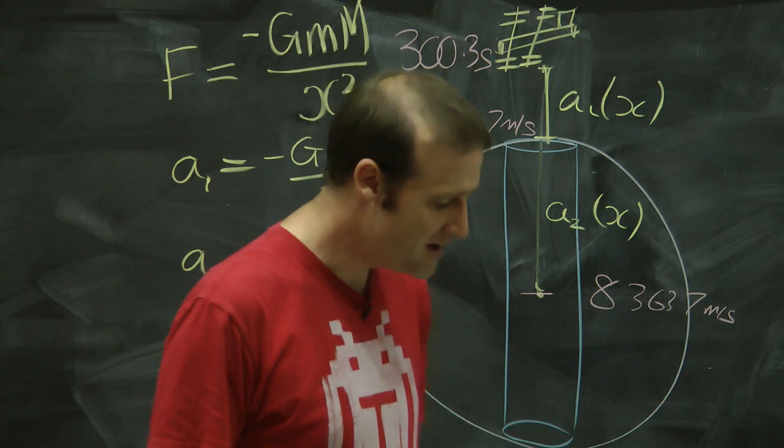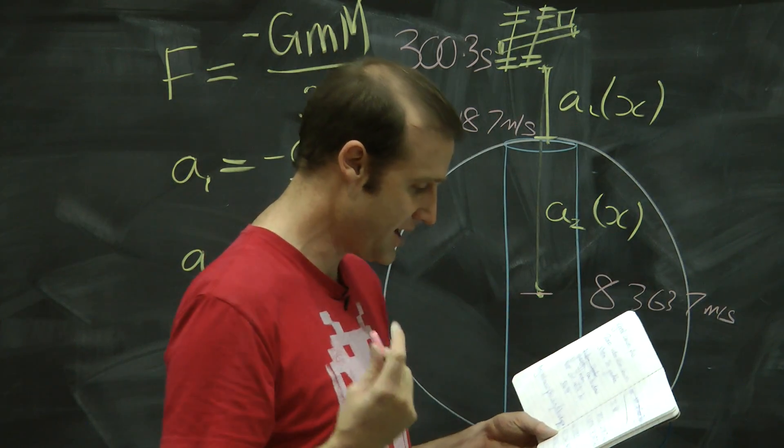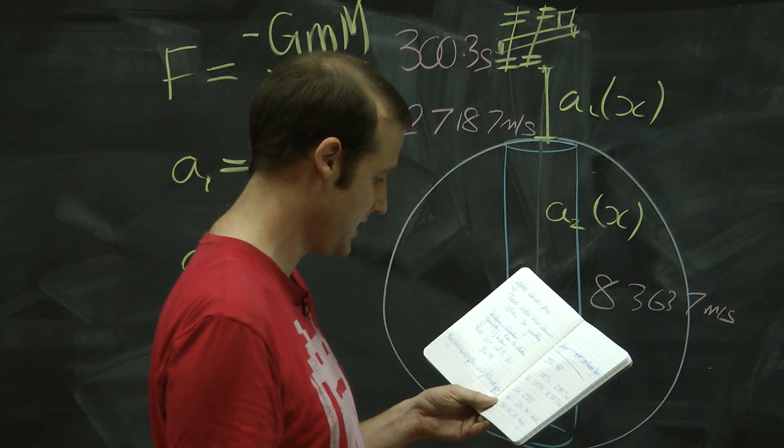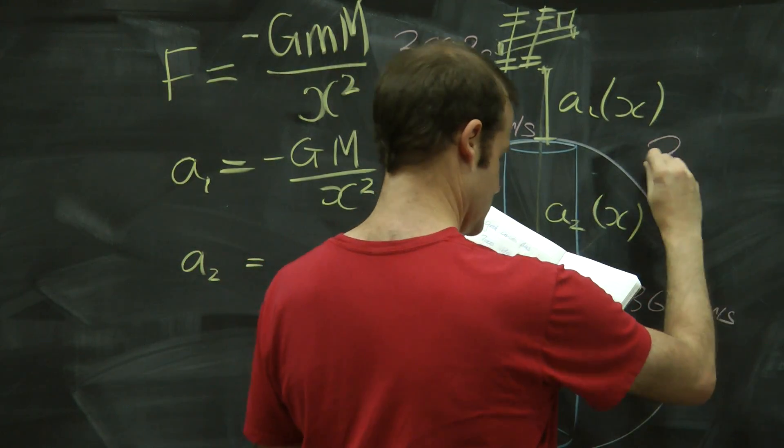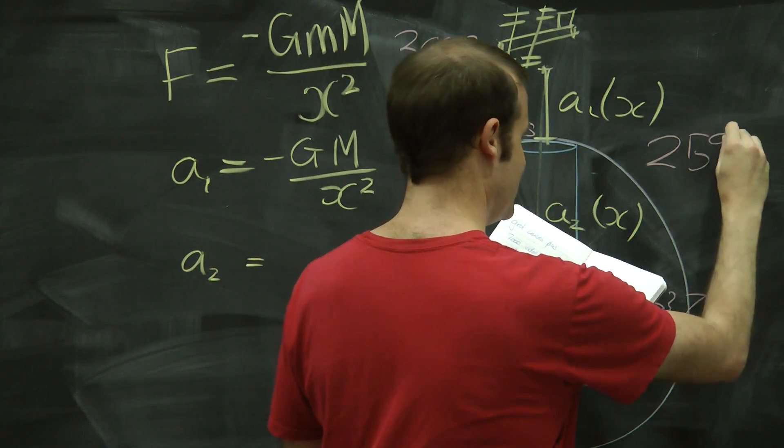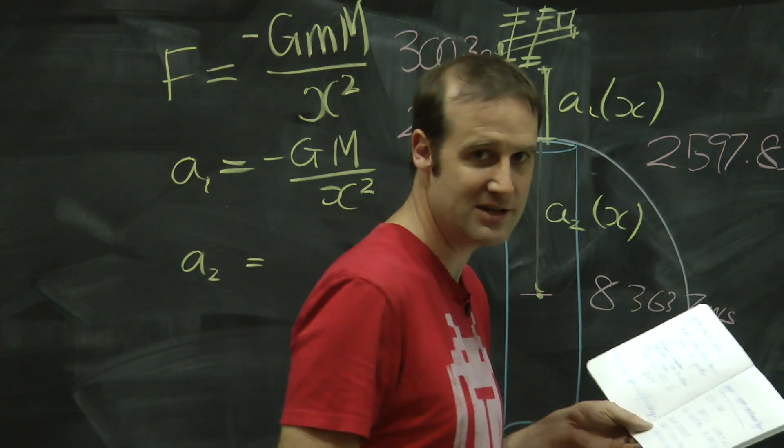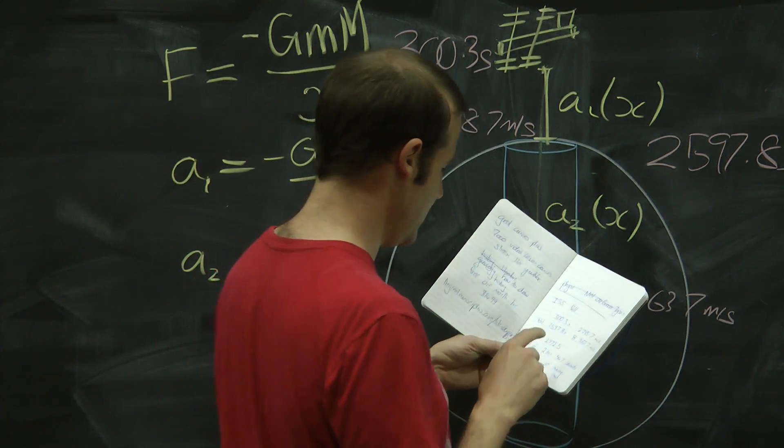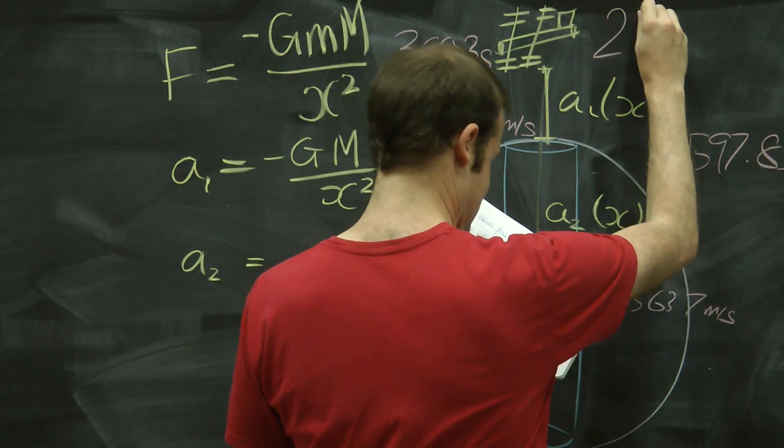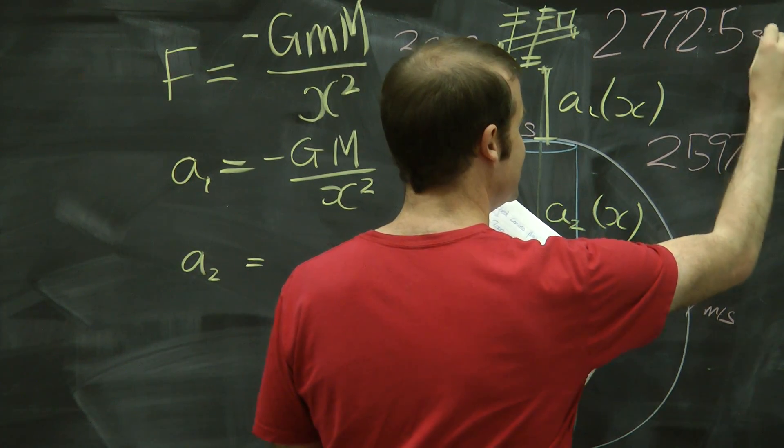And when you come all the way racing out the other side, your total time to go all the way from the ISS down through the Earth, back out the other side, back up, catch the ISS, is 2,597.8 seconds. Compared to the half-orbit time of the ISS is 2,772.5 seconds.